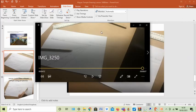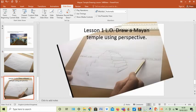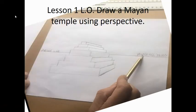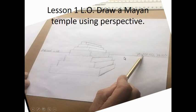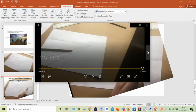Now we're going to move on to how to use this idea of perspective to create a Mayan temple. Here's today's learning objective - same idea, vanishing point in about the same place and the horizon line. Later all this is going to be full of trees and jungle, but we draw it on at the beginning and then cover it up or rub it out. I'm going to show you another short video where I show you how to draw the Mayan temple from scratch.